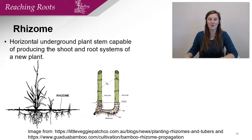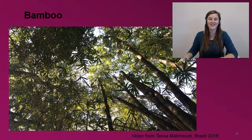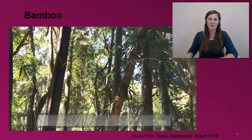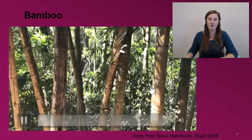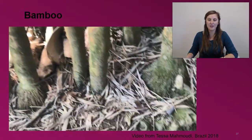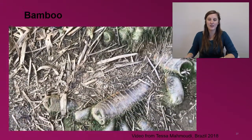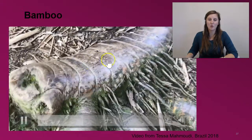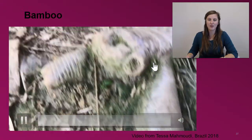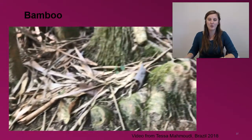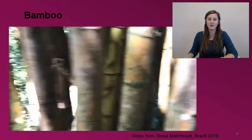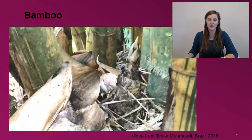The example that we'll go over is of a bamboo plant. This is a video that I took while in Brazil last summer. Here is a bamboo forest. Bamboo is known for overtaking an area. It can overtake and sometimes be detrimental to the forest environment because of these rhizomes. Rhizomes also can start adventitious roots, which you see here. These rhizomes allow the spread of the bamboo plants.